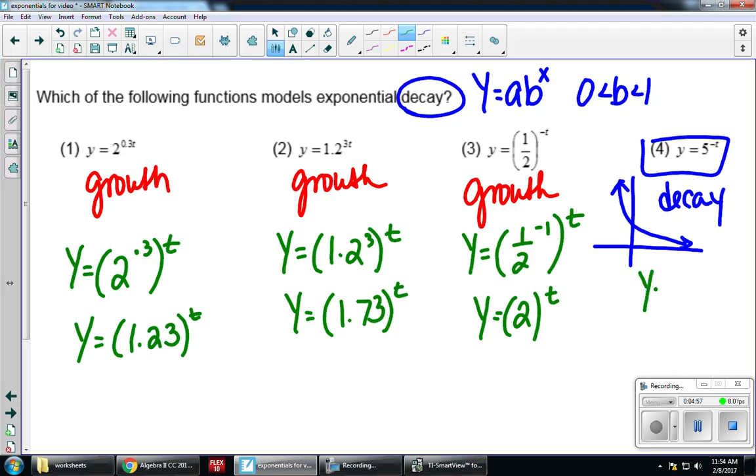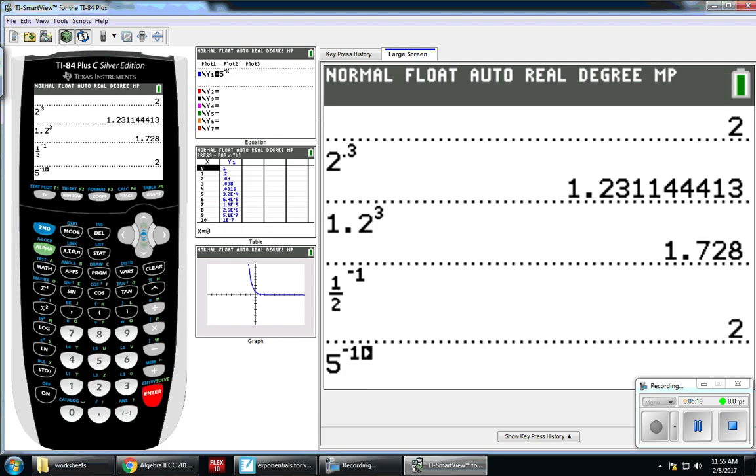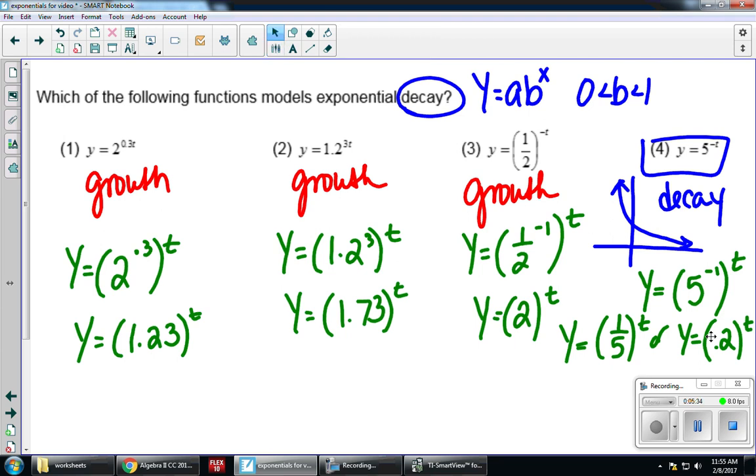And lastly choice 4, we know is decay but we want to see why. So this is really 5 to the negative 1 to the t. Once again if I use my laws of exponents this is going to be 1.5 to the t, or if you forgot your laws of exponents with that negative 1 exponent you can always go to your calculator. 5 to the negative 1 power gives me 0.2. Let's just move this over so I can fit this here. So now we can clearly see why it was decay for choice 4, not just because of our graph but because of our equations. The b or the growth factor was between 0 and 1, it was a fraction of 1 fifth or as a decimal 0.2.